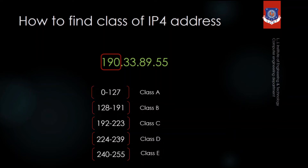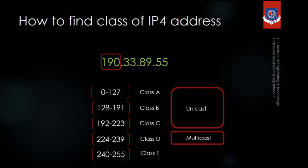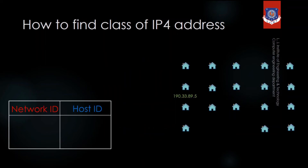Class A, Class B, and Class C are called unicast, meaning these addresses are allocated to a single device. Class D is for multicast, meaning that address is for more than one device. Class E is reserved for development purposes.